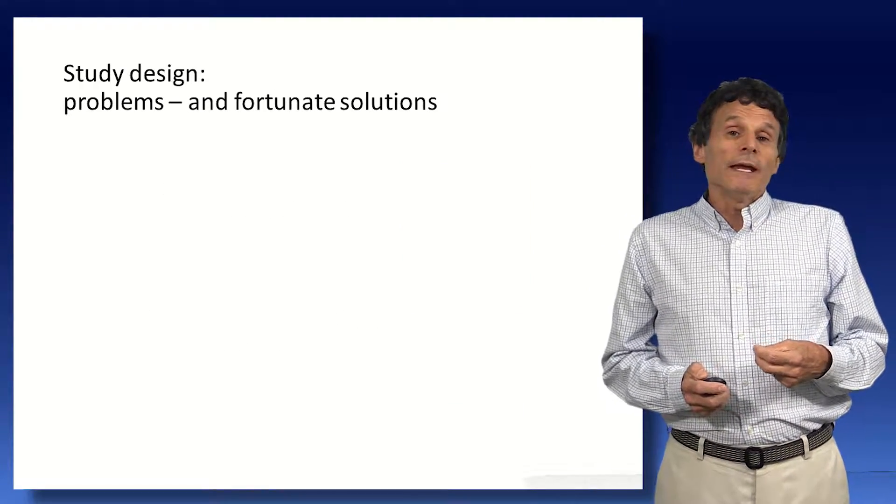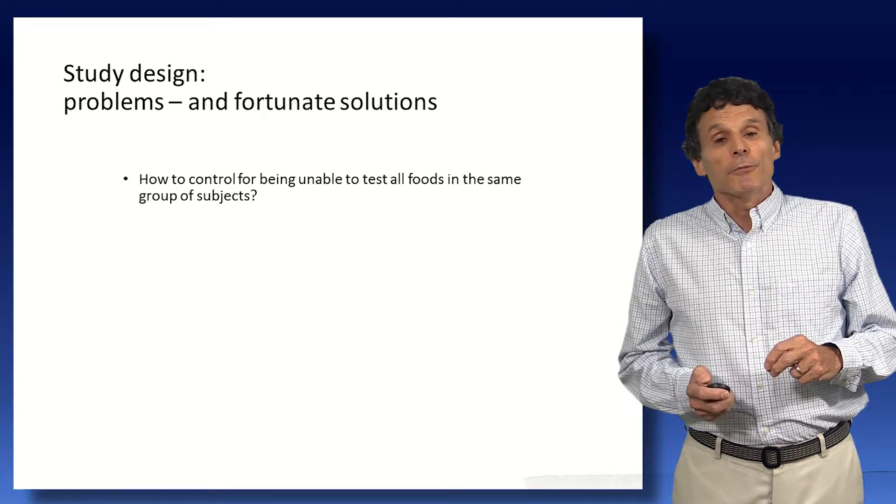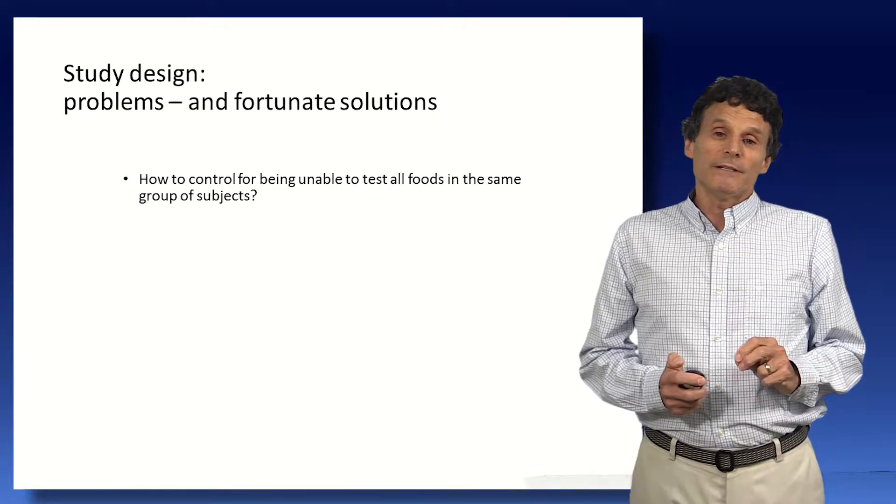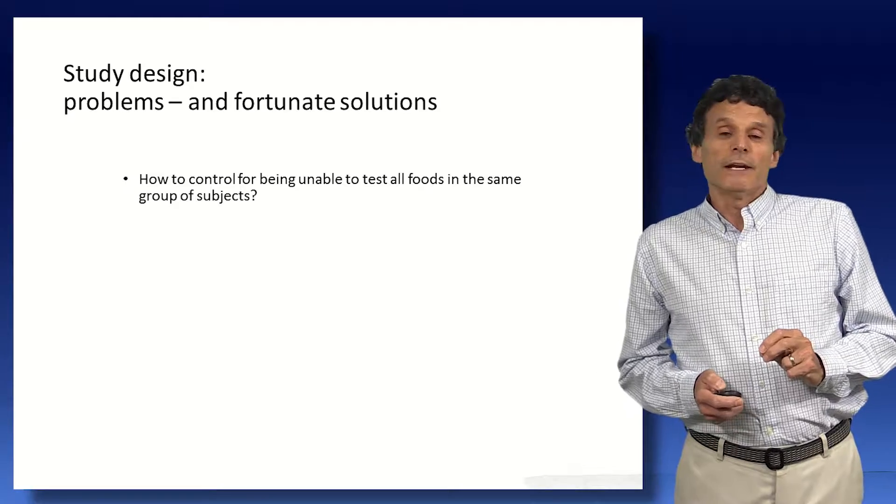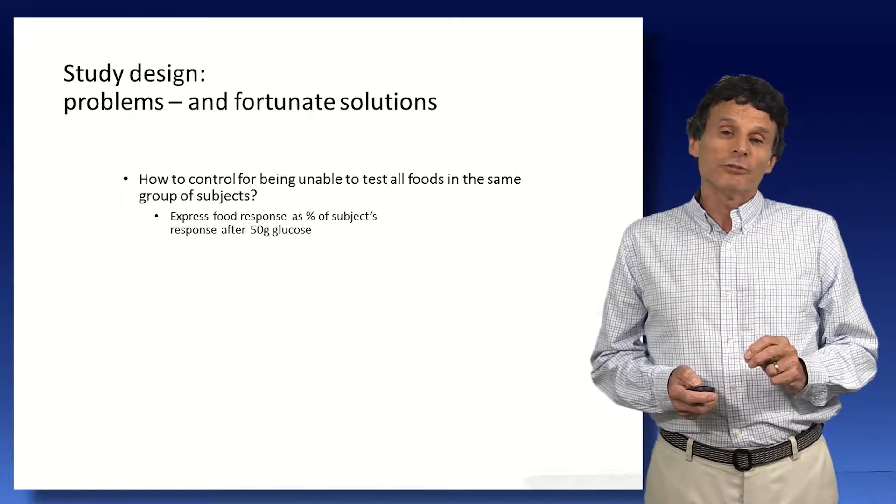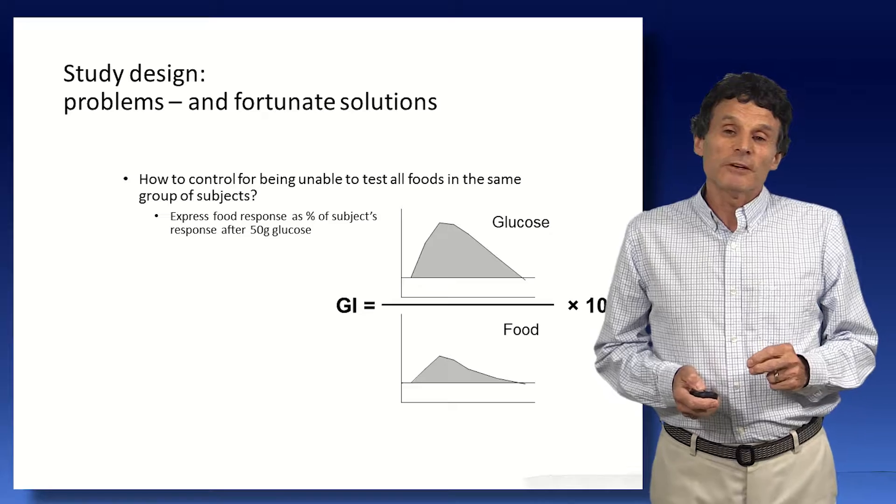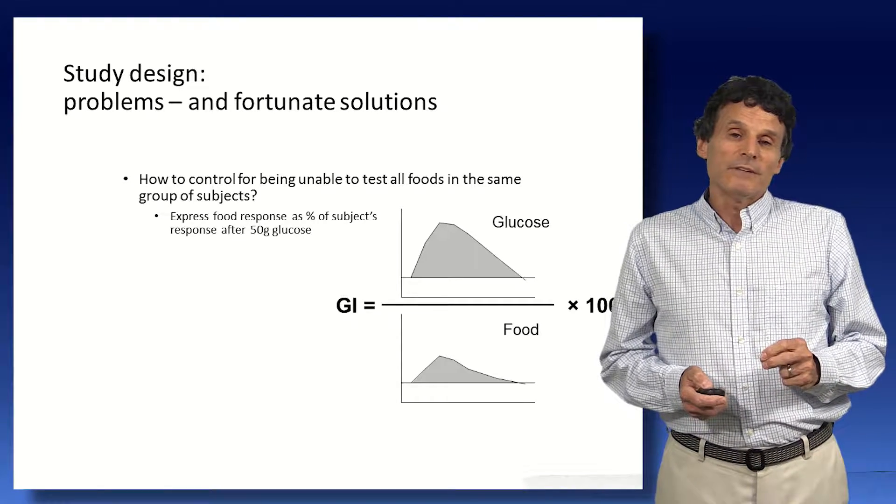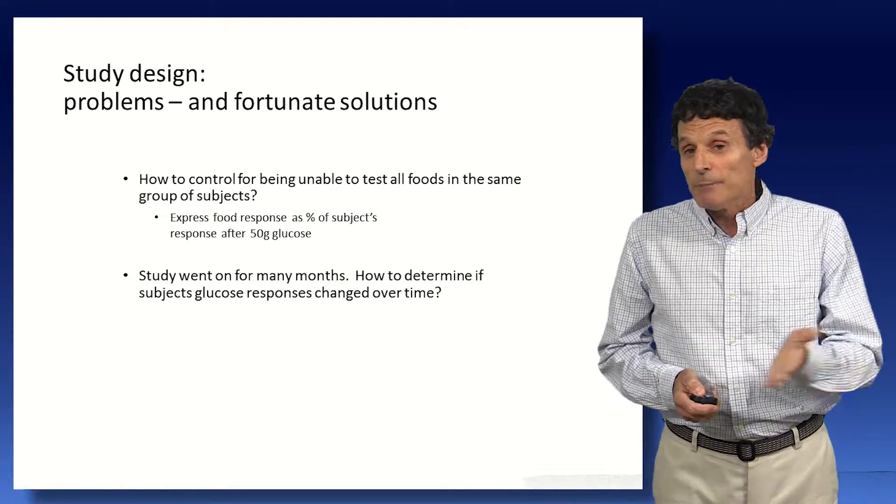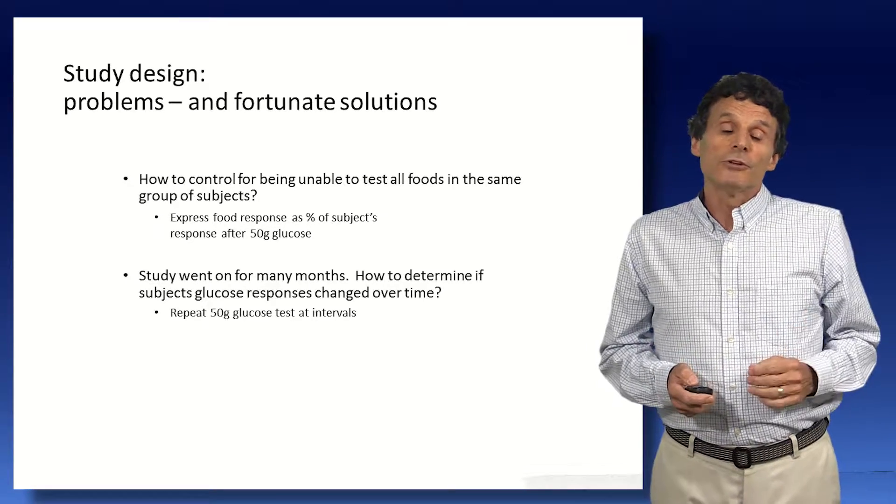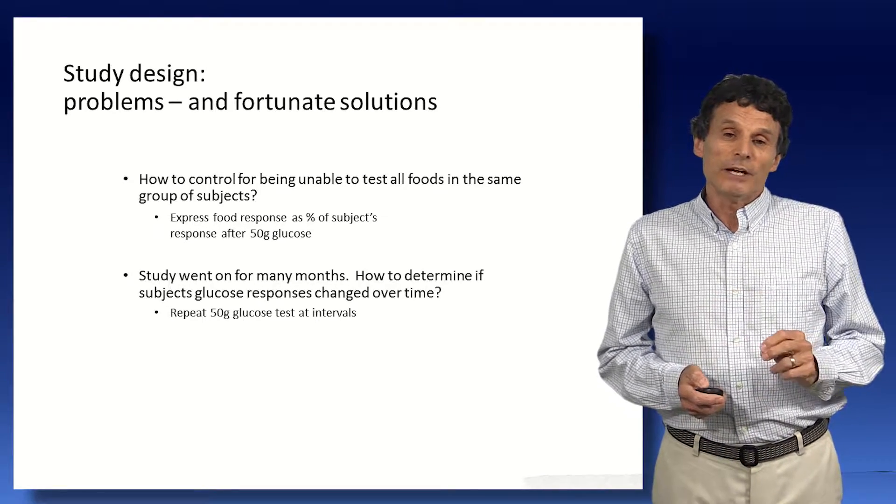So we wanted to study a lot of foods, and we had a number of problems to overcome, and one of them was how could we control for being unable to test all of the foods we wanted to test in the same group of subjects. We could never test 60 foods in the same people. And so the way we thought we could get around that was to give everybody 50 grams of glucose and express their food response as a percentage of the glucose response. We used 50 grams because that was the diagnostic test for diabetes at the time in England. We also were concerned that people's responses wouldn't change over the time of the study that we had. And so we repeated the glucose test at various intervals, and we decided to use the average of all the tests in each subject in the calculation.